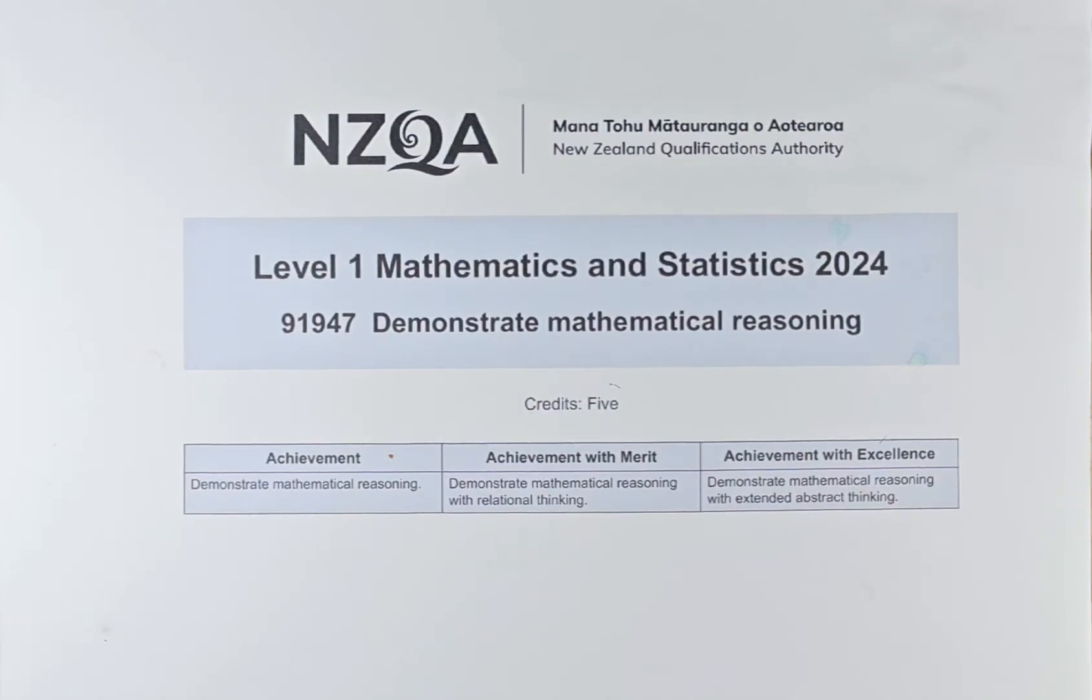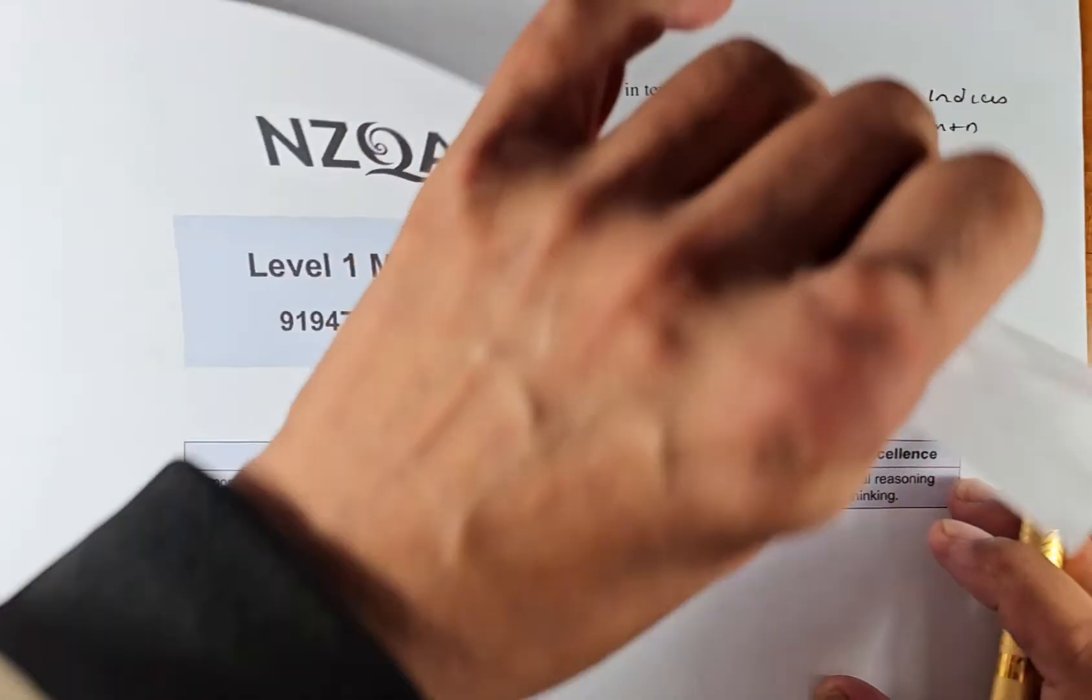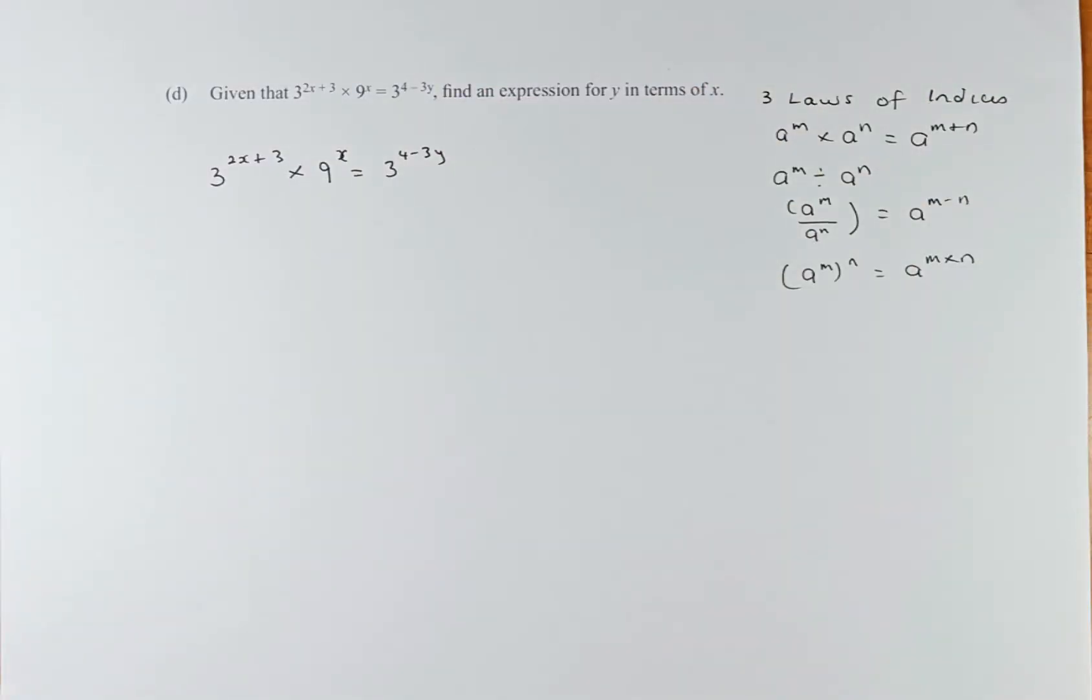Good day! In this video, we are going to do the last question of the 2024 Demonstrate Mathematical Reasoning paper number 91947. This question is an excellence question. If you get a pass or achieve merit or excellence in this paper, you'll get 5 credits. So without further ado, let's do question 3D.